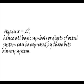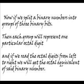8 means 2 to the power of 3. Hence all basic symbols or digits of the octal system can be expressed by a 3-bit binary system. Now if we split a binary number into groups of 3 binary bits, then each group will represent one particular octal digit.